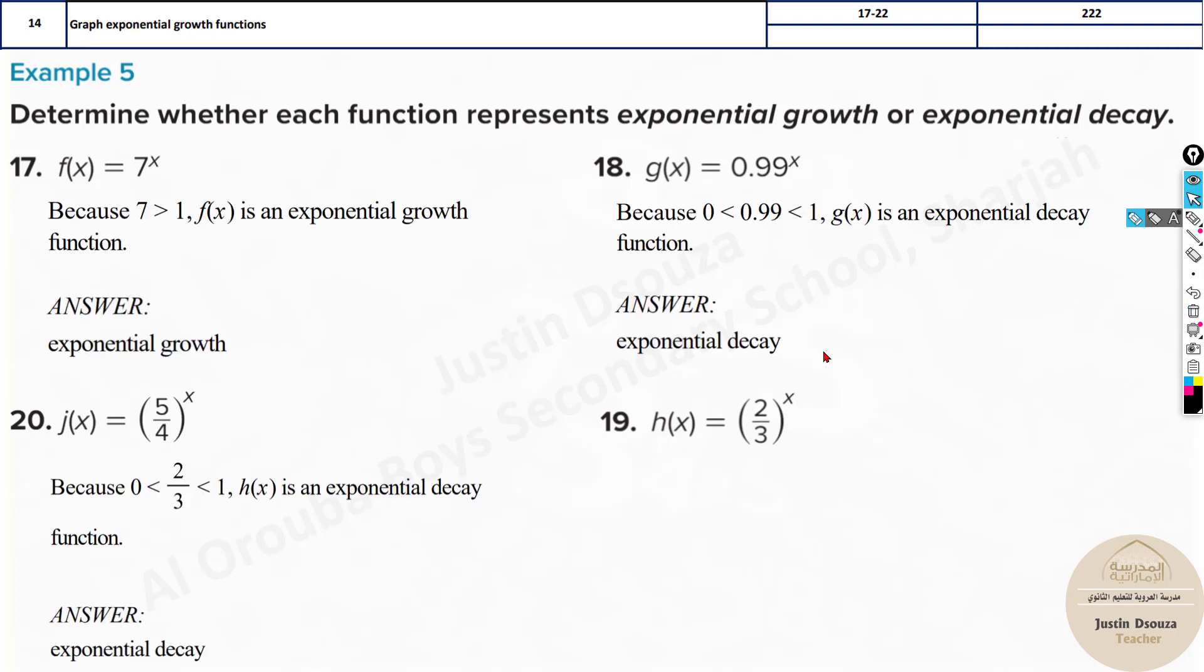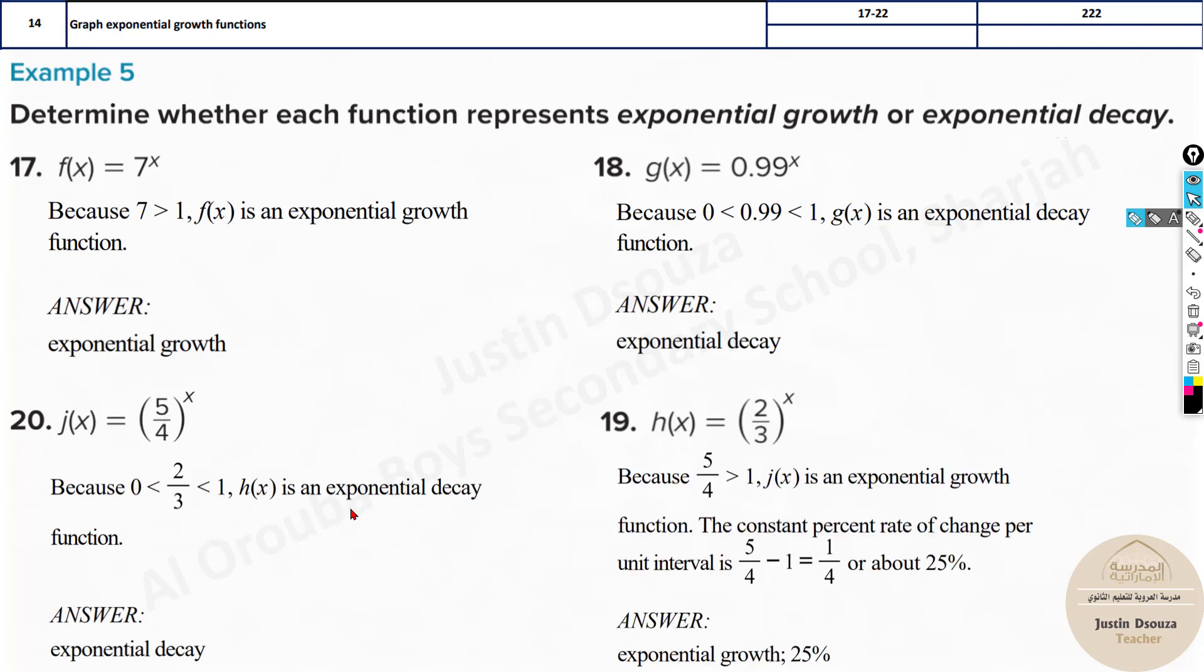Now you will see over here. Growth, decay. Now, I'm sorry. I just realized one thing. I have swapped the answers. This is supposed to be the answer for this. This is decay two thirds. And this is growth. 5 by 4 is 1.25. So it's 25% growth.